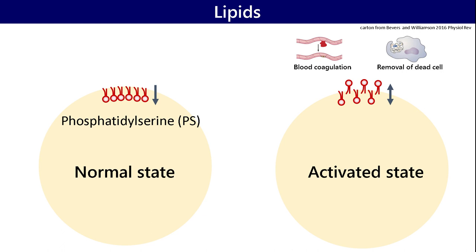Exposed PS functions as a scaffold for coagulation factors when bleeding occurs, and also as an eat-me signal of dead cells. However, how PS is exported on the cell surface has been unknown for decades.